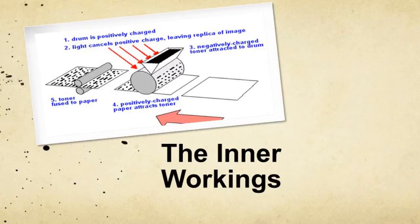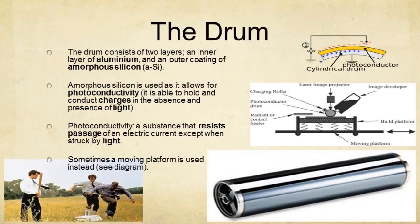Slide two covers the inner workings. There is a diagram of the interior at its most basic to put things into perspective. The light from the original document comes in from one side. There are two layers to the drum: an inner layer of aluminium and an outer layer of amorphous silicon. The amorphous silicon is needed as it makes use of photoconductivity.